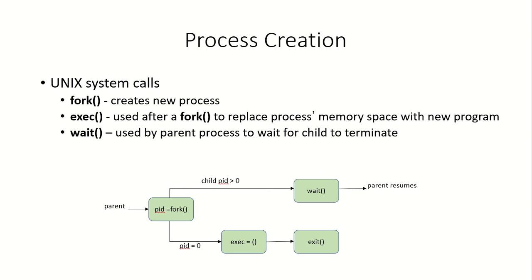The fork system call is used to create a new process. Once created, the child process can use the exec system call to replace its memory space with a new program. The wait system call is used by the parent process to wait for the child to terminate. You can check my video on system calls which explains these in detail.